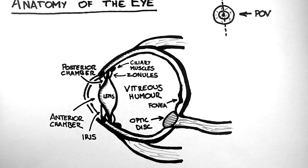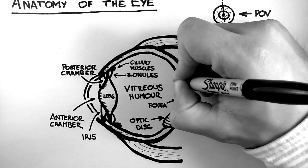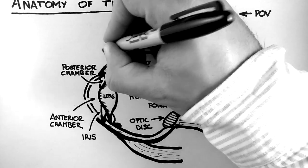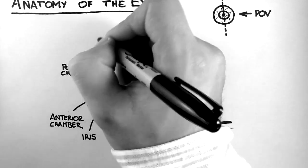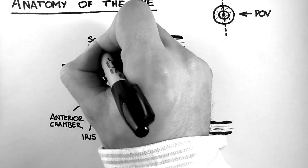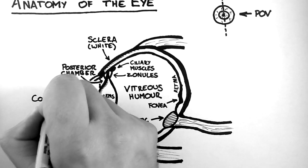I should also label this whole section as the retina, which is the part of the eye responsible for sensing light. Out here we have the sclera, which is the white part of the eye, and at the front we have the cornea, which is the clear part of the eye.